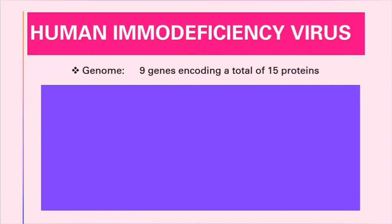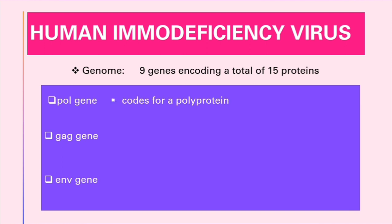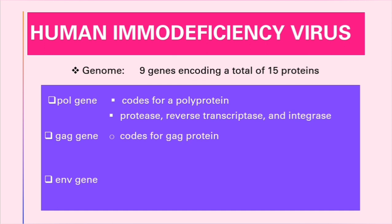The genome of the HIV virus has nine genes encoding for a total of 15 proteins, but of these nine genes only three are very important: number one the pol gene, number two the gag gene, and number three the env gene. The pol gene codes for proteins which consist of protease, reverse transcriptase, and integrase.